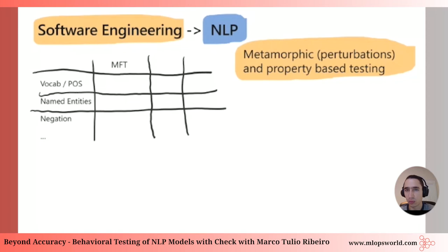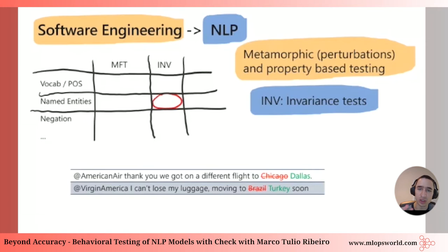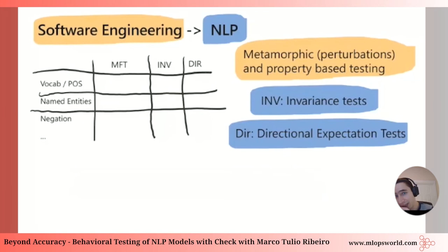The second type is perturbation tests, called metamorphic tests in software engineering. You apply certain perturbations to unlabeled inputs and measure expected properties of the output. One type is an invariance test, where perturbations should not change the label. For example, for sentiment analysis, if you change named entities like Chicago to Dallas, or John to Luke, the model should predict the same sentiment as before — since those changes are semantically irrelevant.